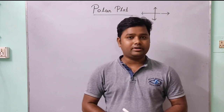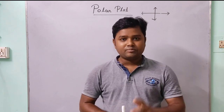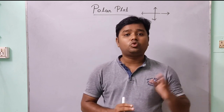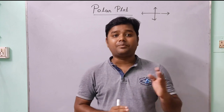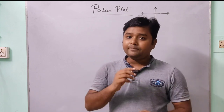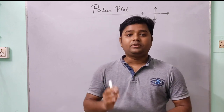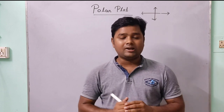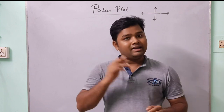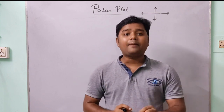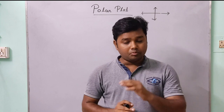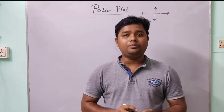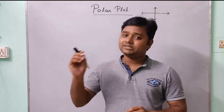In Bode plot, we have studied two plots separately — one is the magnitude plot and one is the phase angle plot. We had to draw two plots in separate cases. Now, in polar plot, we will study the plot which combines the magnitude and the phase angle, where the omega value varies from 0 till infinity.